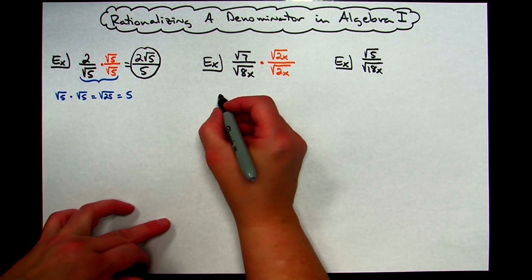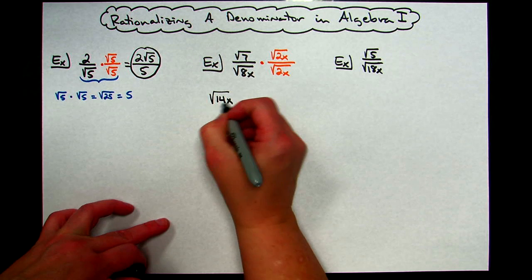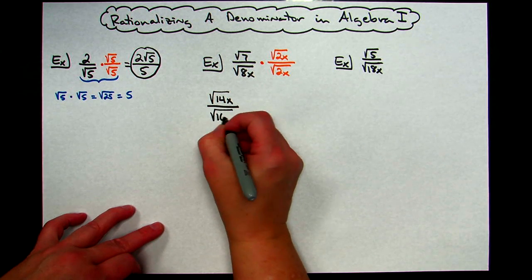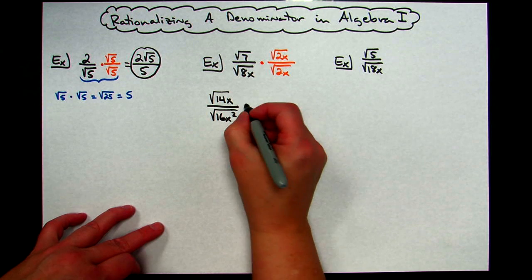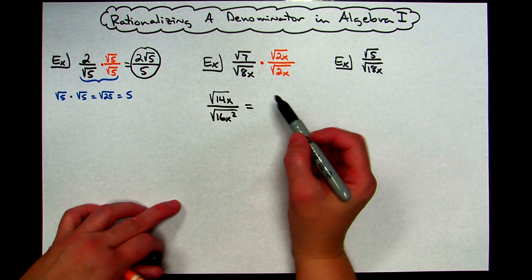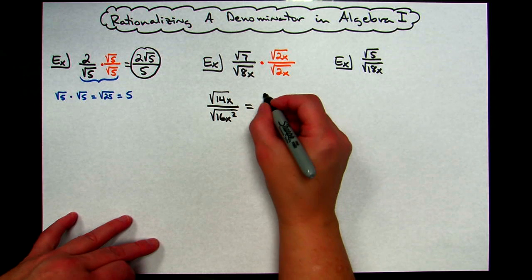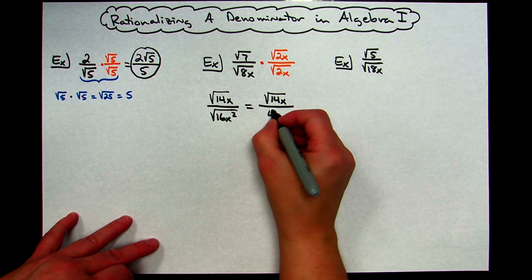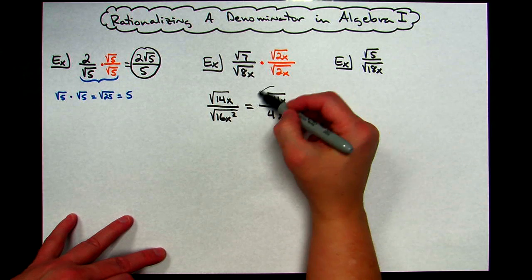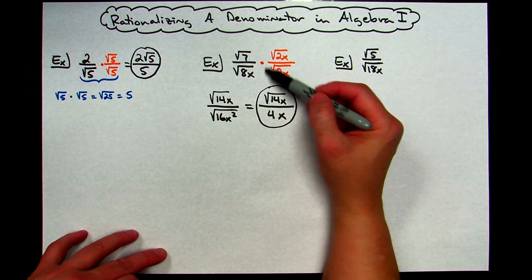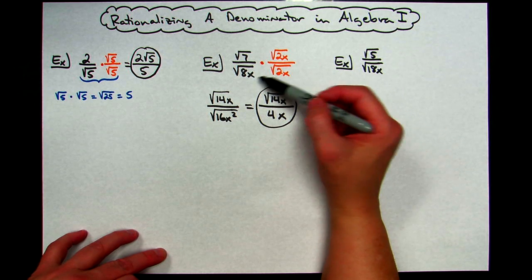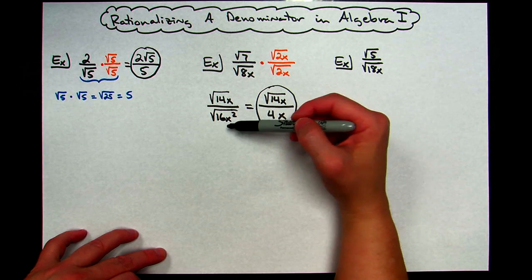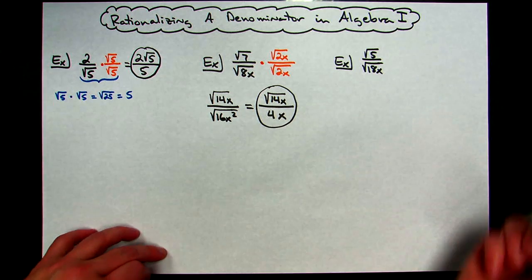On the top I'm going to have square root of 14x. On the bottom, 8 times 2 is 16, and then x squared — so square root of 16x squared. That numerator is already as simplified as it can get; square root of 14x is as small as it can get. This denominator is a perfect square, so it simplifies to just 4x. Everything is in lowest terms. If you can come up with the form of 1 that makes the denominator a perfect square root — and the smallest perfect square root you can find — then your numerator is already going to be in simplest form.